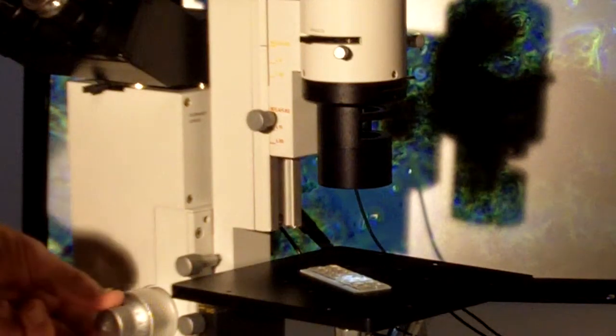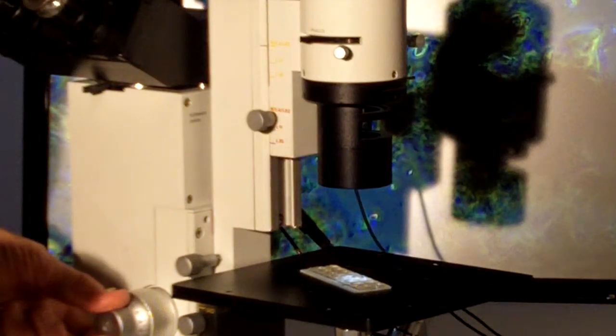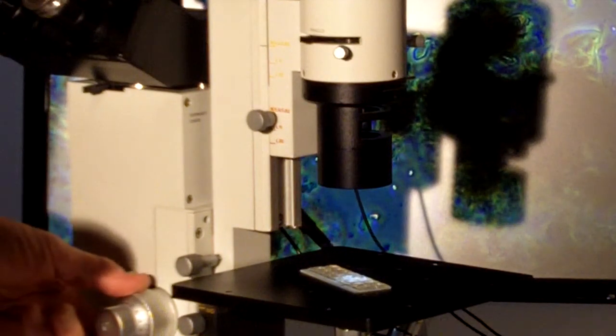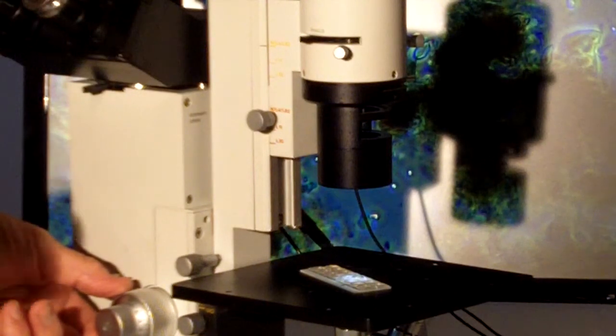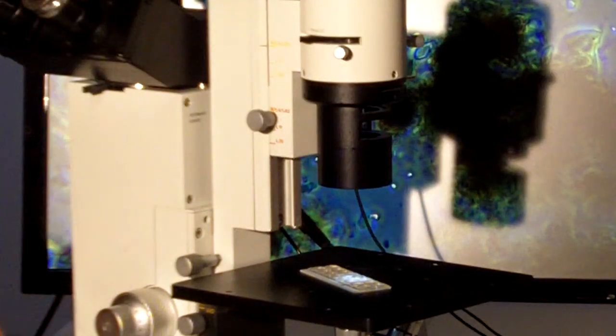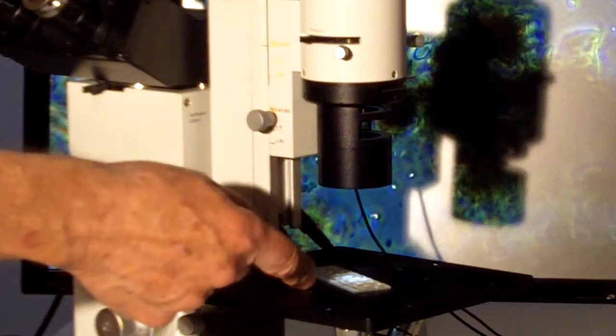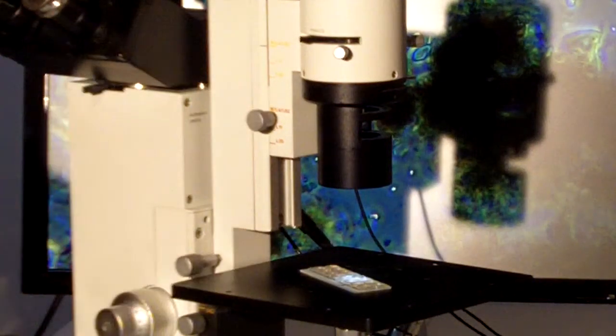Phase contrast allows us to see detail and contrast in unstained fresh living material. And of course the optics are down below here so whatever we can fit in between this 60 millimeter distance, such as petri dishes, small flasks or chambers of your own design, can easily be added.